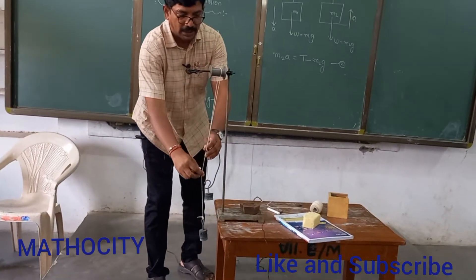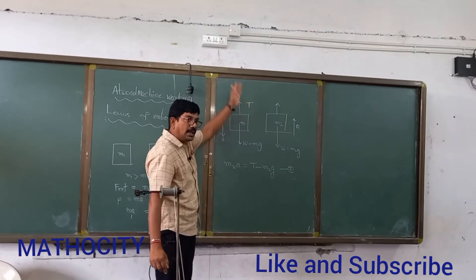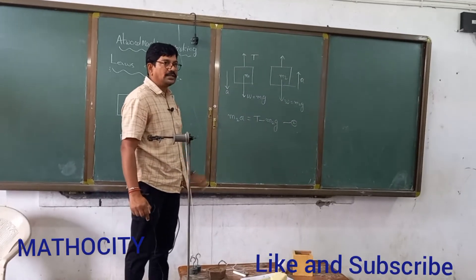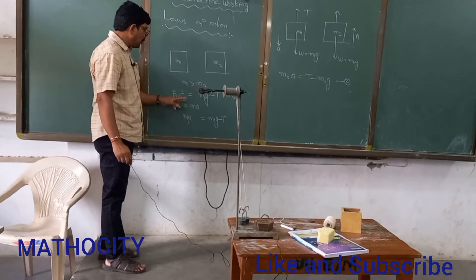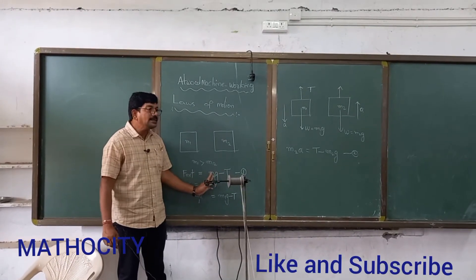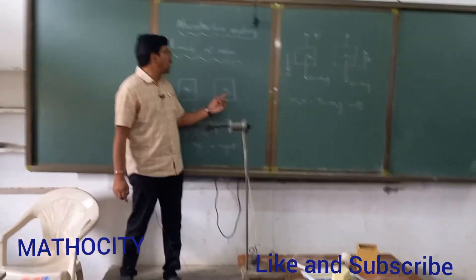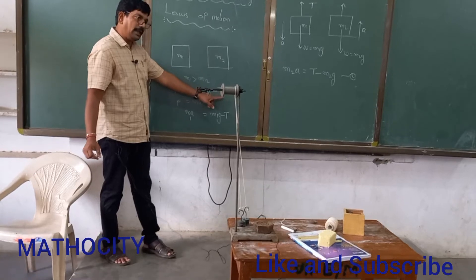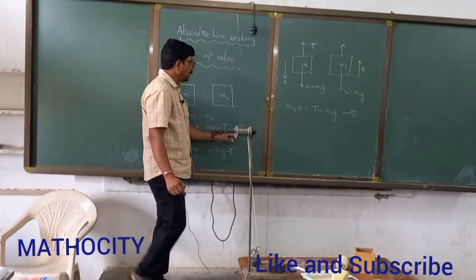From Newton's second law, F is equal to MA. What is the net force acting on the body of mass M1? F net is equal to M1G minus T — because M1 is greater than M2, the weight is heavier. Therefore the net force is M1G minus T. Applying Newton's second law: M1A equals M1G minus T. Let this be equation number one.